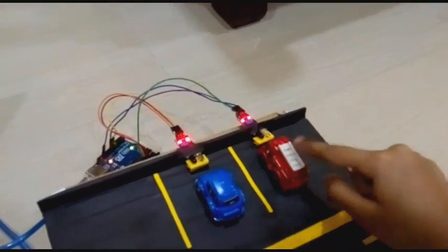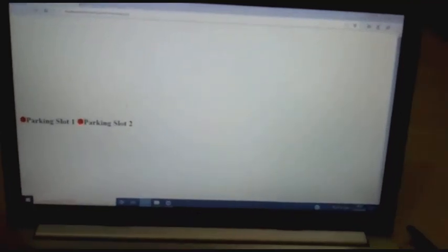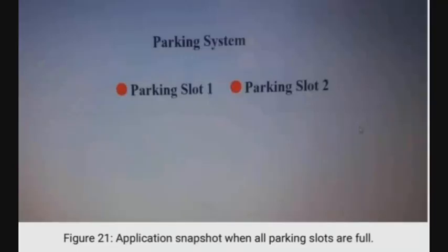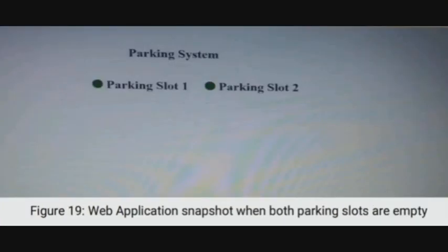If a car is not parked in the parking slot, it will display a green color circle. If the car is parked in the parking slot, it will display a red color circle, making the information accessible to the user.